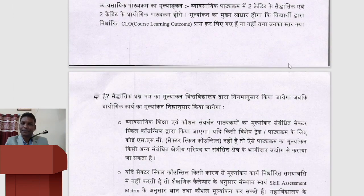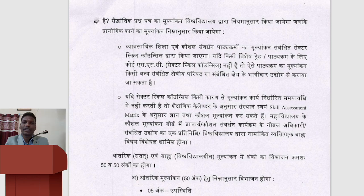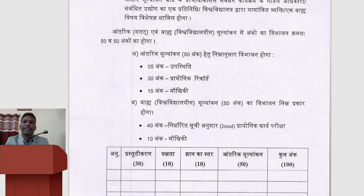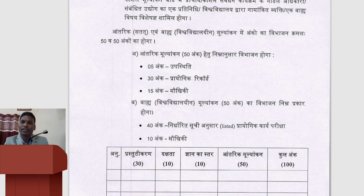Jo 25 options hain inmein se koi bhi aapke liye honge, toh sabhi mein same exam pattern lagu hogi. Yeh jo bio-saheik part-cam hai iska mulyankan 4 credit ke liye hoga. In 4 credits mein — 2 credit theory paper ke liye honge jo university exam se hongi aapke sambandid vidyalaya se, aur 2 credit aapke practical part ke liye honge. Theory paper university dwara taiyar ki gayi question se hoga — jo traditional hamara paper hota hai — aur woh 100 marks ka hoga.